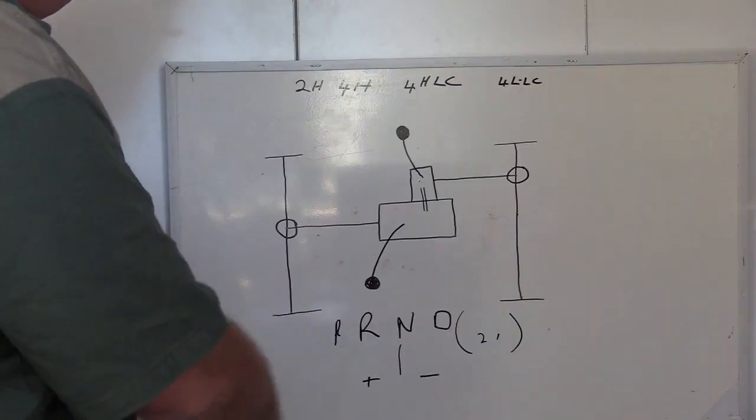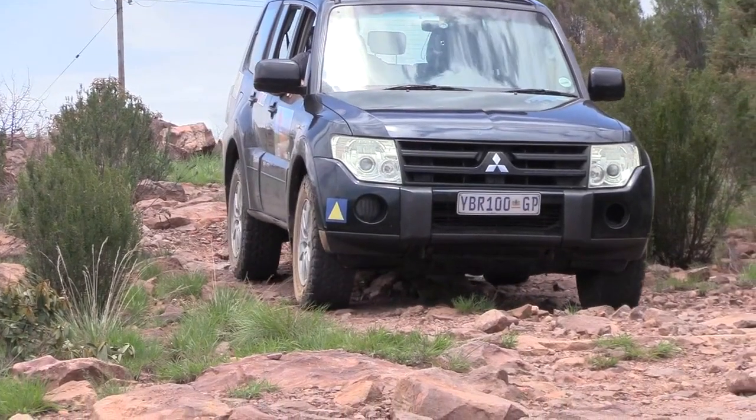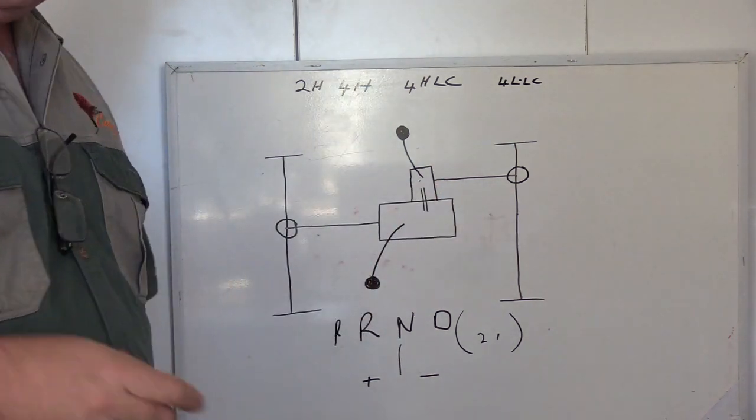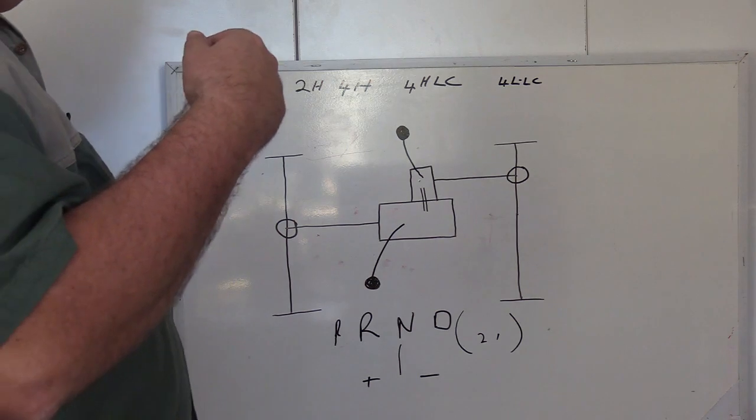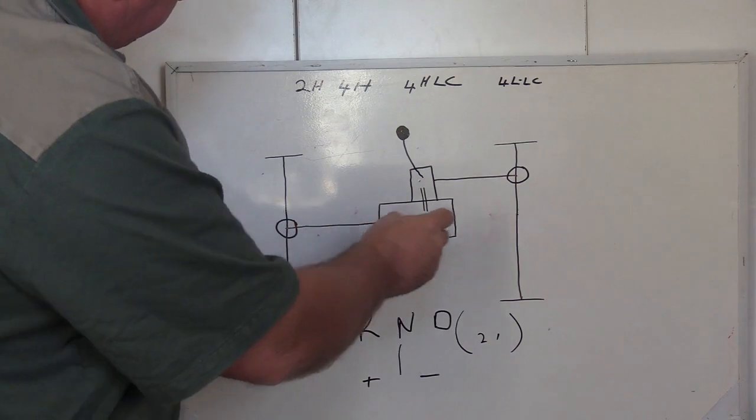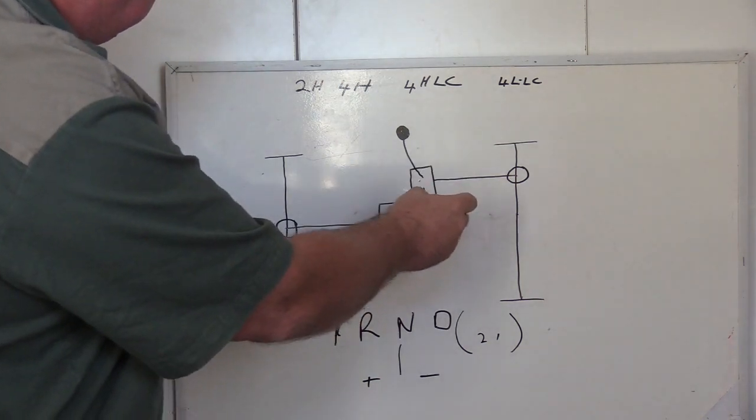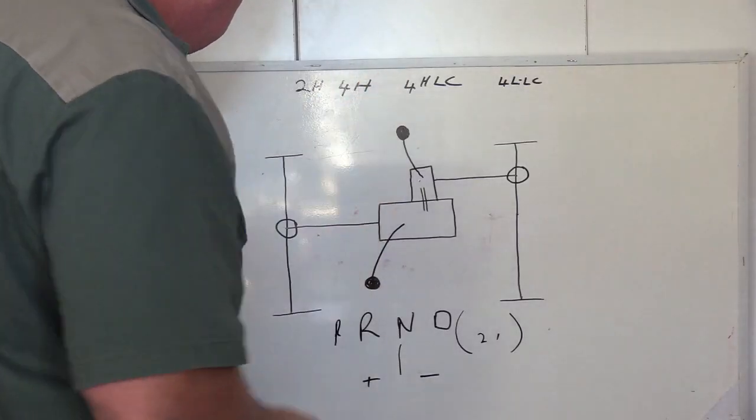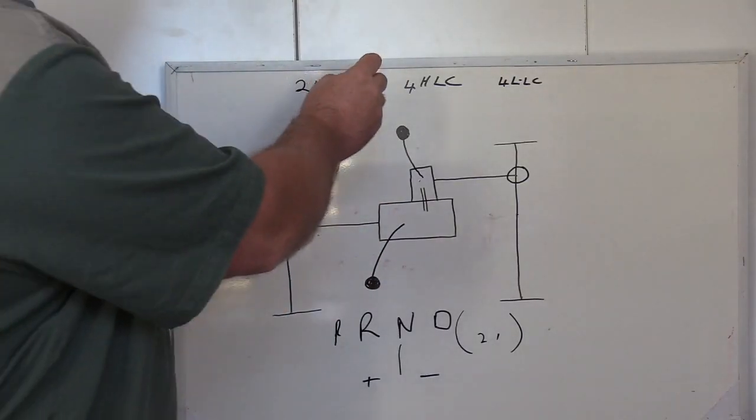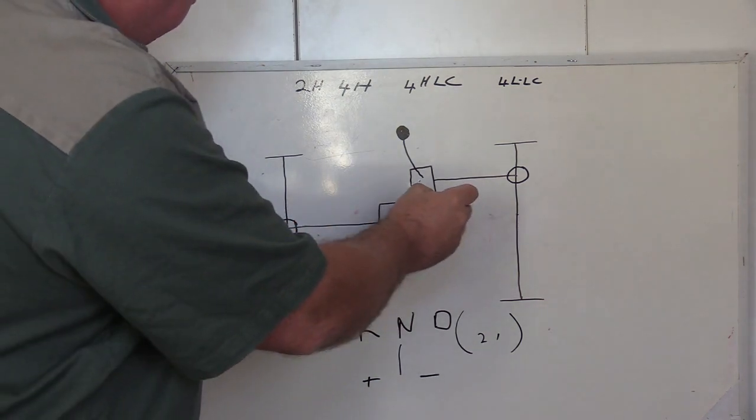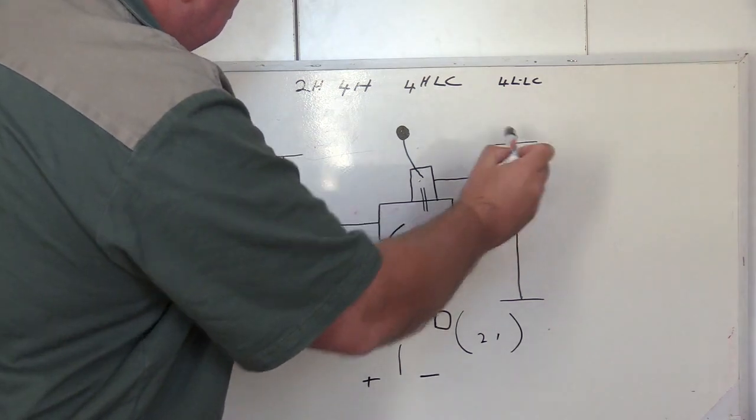Then you've got four high, which means the rear and the front axle are driven. But in this one's case, which is different to the pickup system, is that this Mitsubishi has got a differential in the middle as well. So if you switch it to four high, you have a differential here, a differential there, and a differential there.